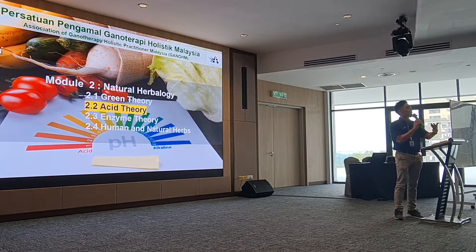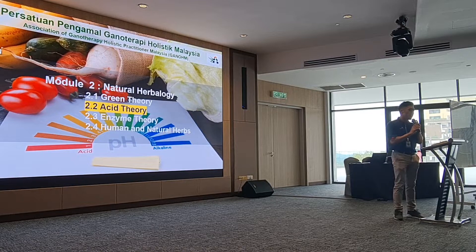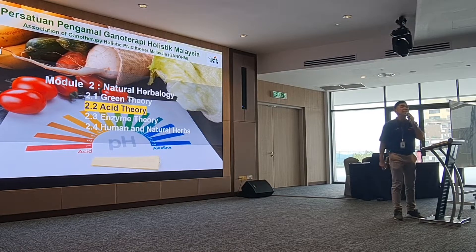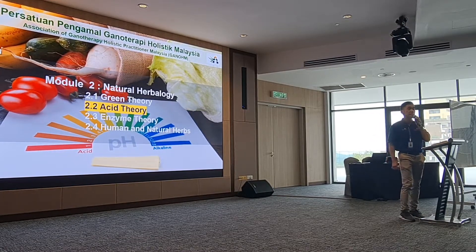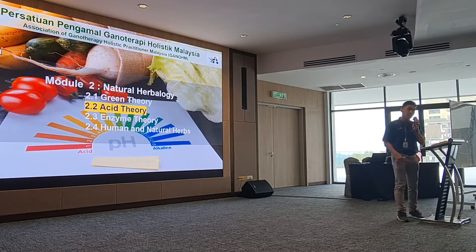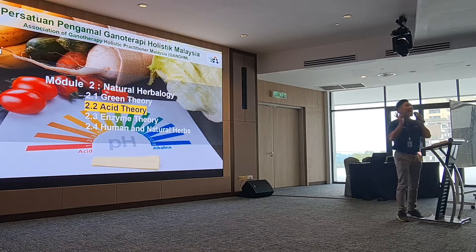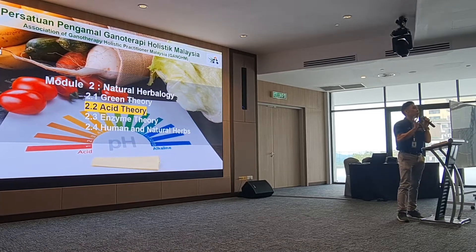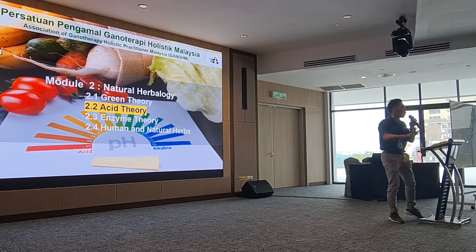Just now, the green theory was about the color. Now we are talking about the pH — the environment of this element in the body, in different parts of the body, and how the food is going to correspond to these organs.